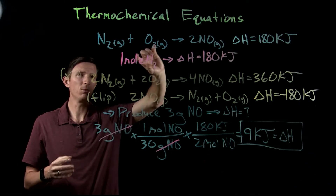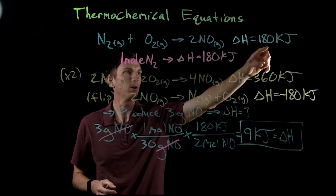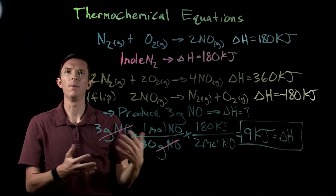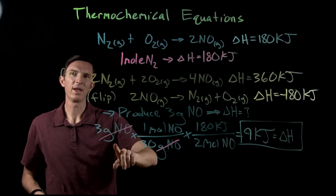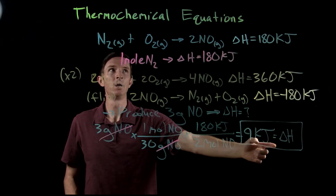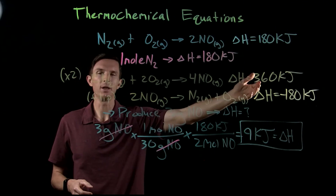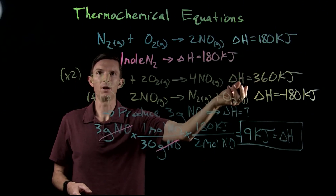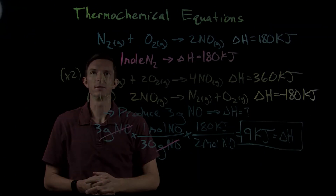As we work through thermochemical equation reactions, there are different ways to manipulate them, and each affects the enthalpy: changing coefficients, flipping the reaction, or using a specific mass or molar amount of a reactant or product. Hopefully this gives a good background in thermochemical equations, how they relate to enthalpy, and how we can use enthalpy to calculate heat.